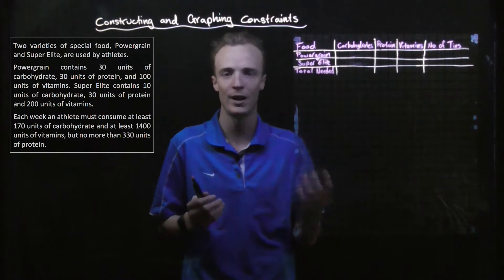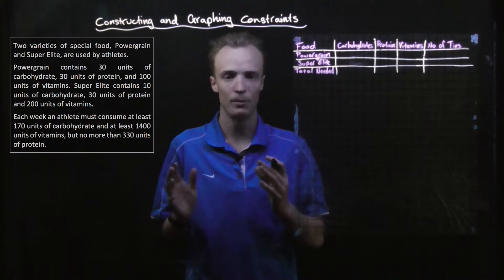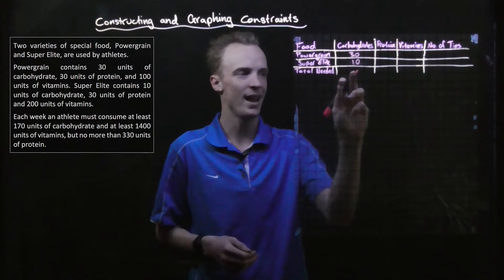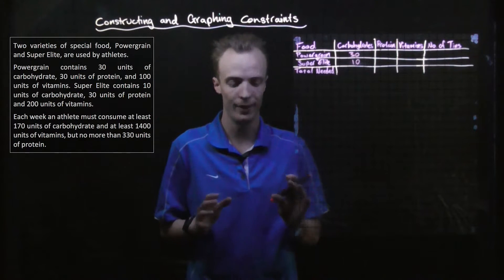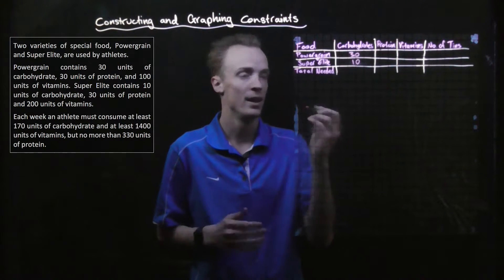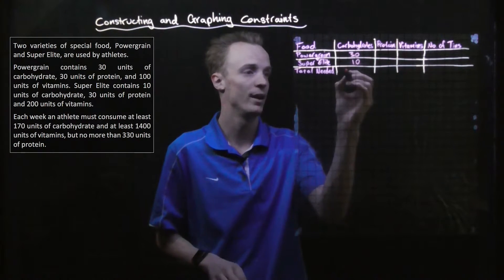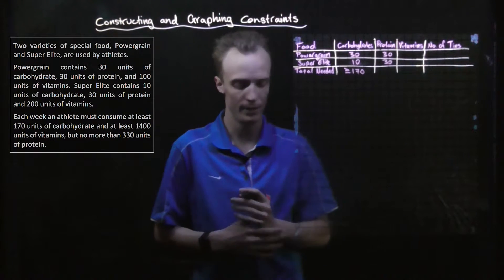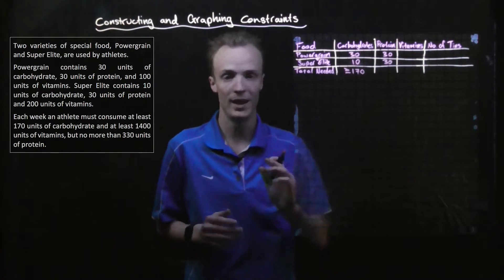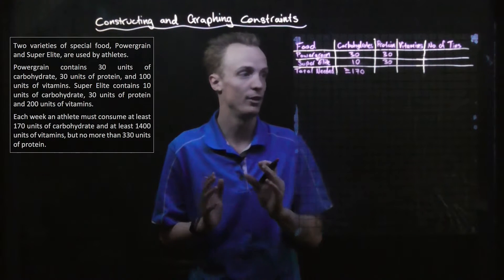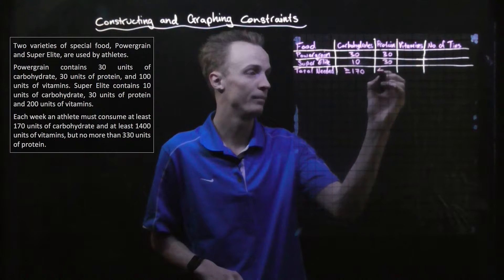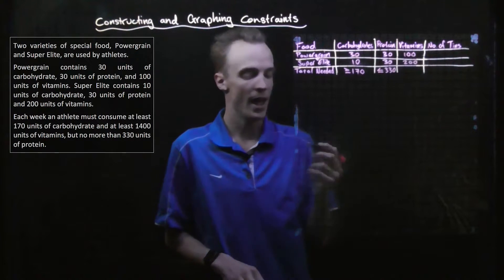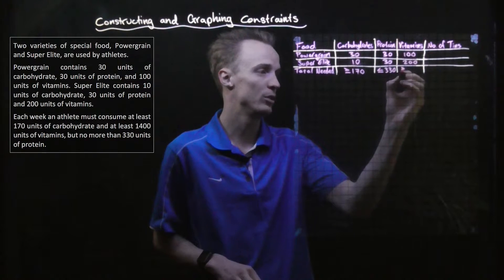Now we fill out the table using the information we've got. In Power Grain the units of carbohydrates is 30, and for Super Elite it contains 10 units. We need at least 170 units of carbohydrates, so that's equal to or greater than 170. Both Power Grain and Super Elite have 30 units of protein, and we can't have any more than 330 units — so that's equal to or less than 330. Power Grain has 100 units of vitamins, Super Elite has 200, and we need at least 1,400 units — equal to or greater than 1,400.